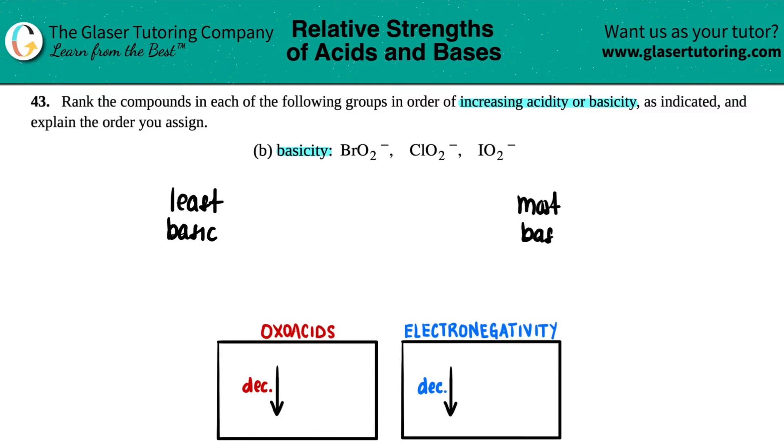Sometimes it's easier to not think of basicity but to think of acidity. Generally, the trends are easier to understand in terms of acidity, so you can translate that back to basicity. If you are the least basic, you are the most acidic. The more acidic you are, the less basic your conjugate base. Vice versa: if you're most basic, you are the least acidic.